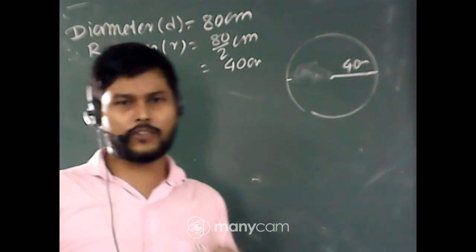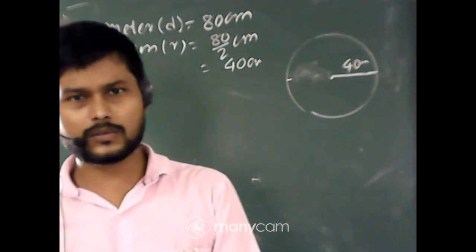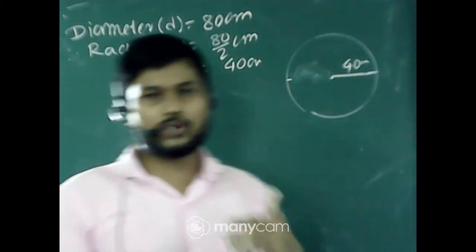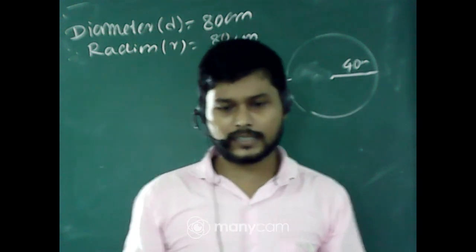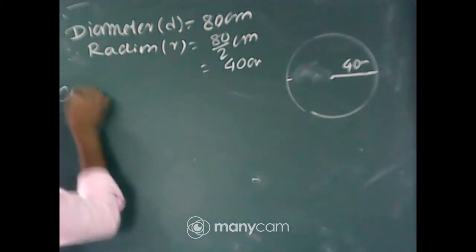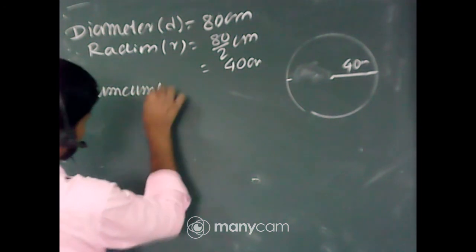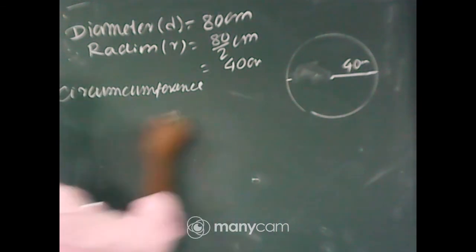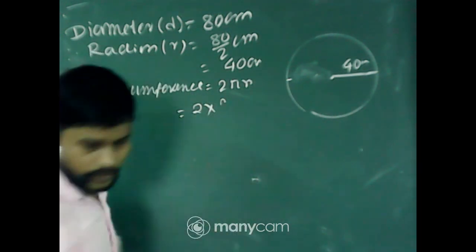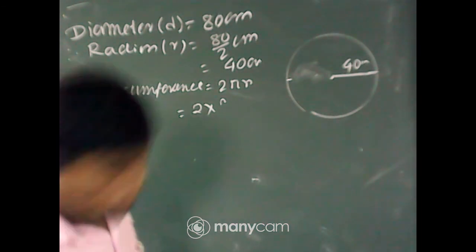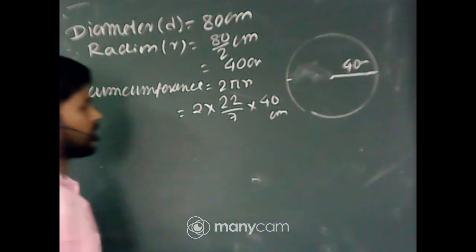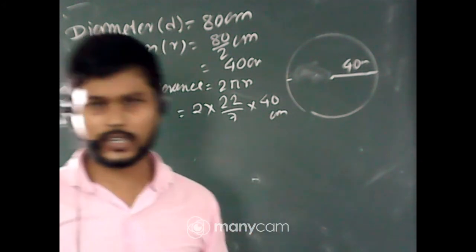The circumference of the wheel = 2πr = 2 × (22/7) × 40 cm. This is the distance covered by the wheel in one rotation. The speed of the car is 66 km/h. We need to convert this to centimetres per minute: 66 km/h × 100000 cm/km ÷ 60 min/h = 110000 cm/min.